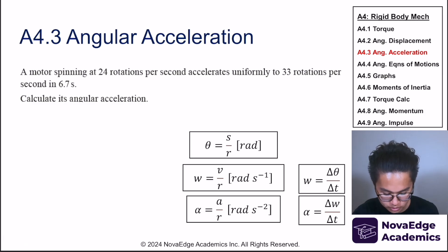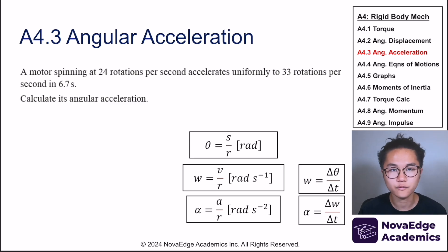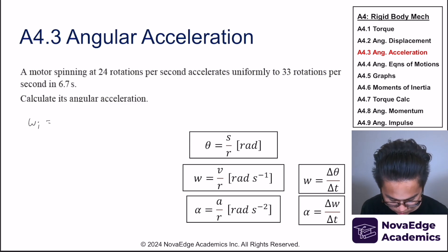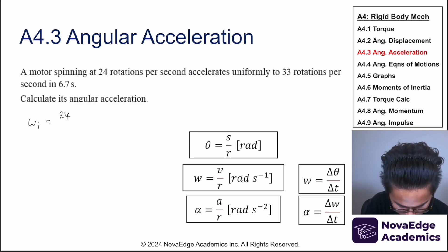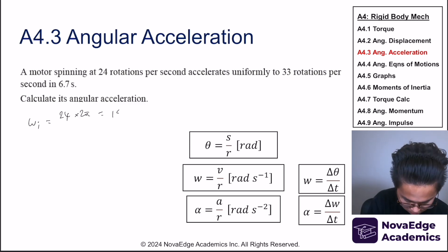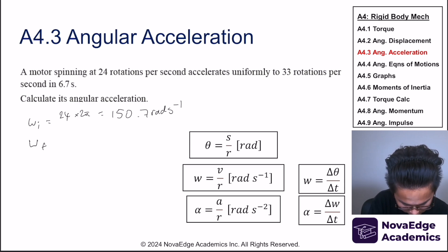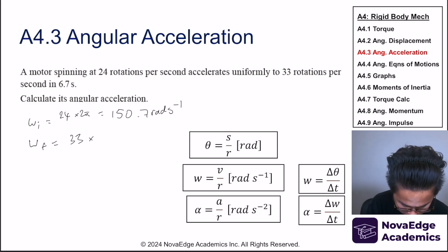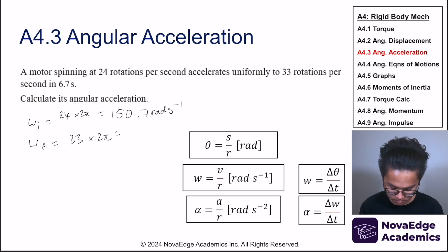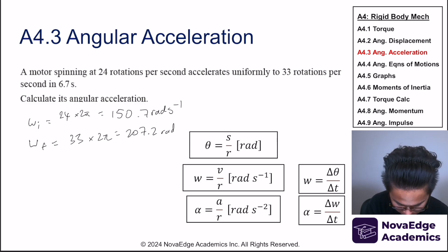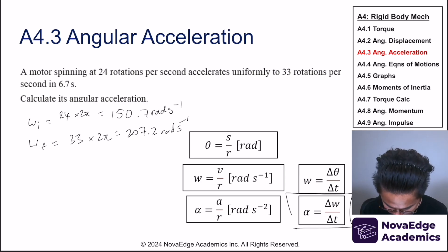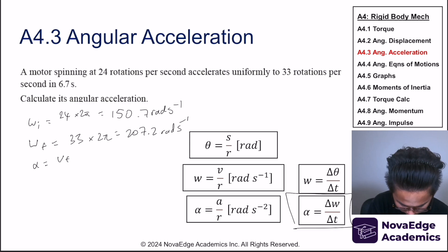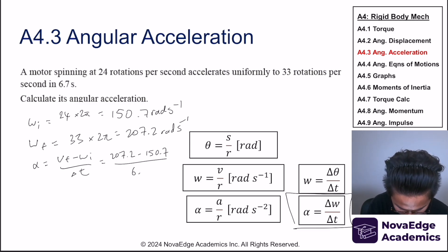For another problem: a motor spinning at 24 rotations per second accelerates to 33 rotations per second. Initial angular velocity is 24×2π = 150.7 rad/s. Final angular velocity is 33×2π = 207.2 rad/s. Angular acceleration is (207.2 − 150.7) divided by 6.7 seconds, giving 8.44 rad/s².